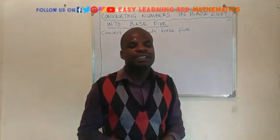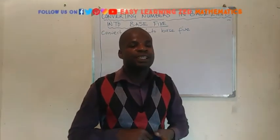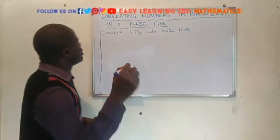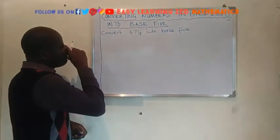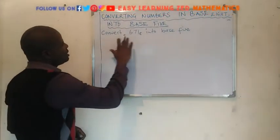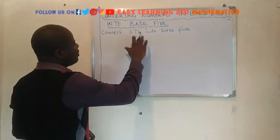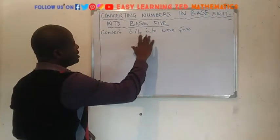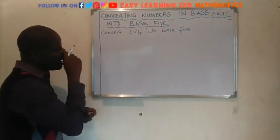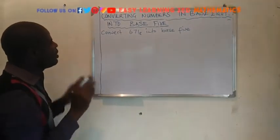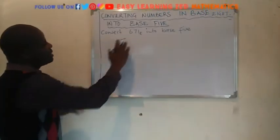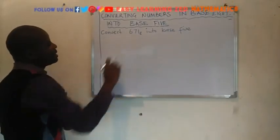Let's get into today's work. Here on the board we have a question which is: convert 671 base 8 into base 5. Like I said earlier, we are going first to convert this number into base 10.